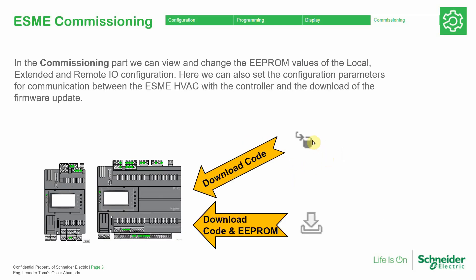So when we just press this icon to download the code, it just downloads the code. In order to get communication to other devices and set the default values of the EEPROM, we should perform the 'download all' action, so we can download the code and the configuration of the equipment.